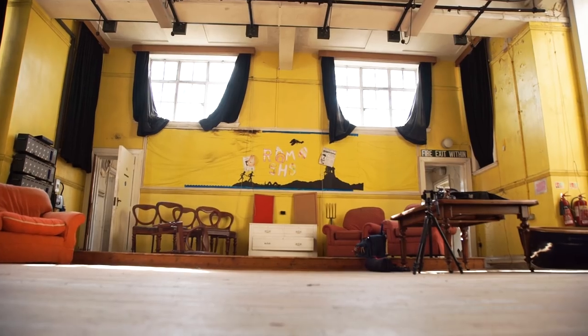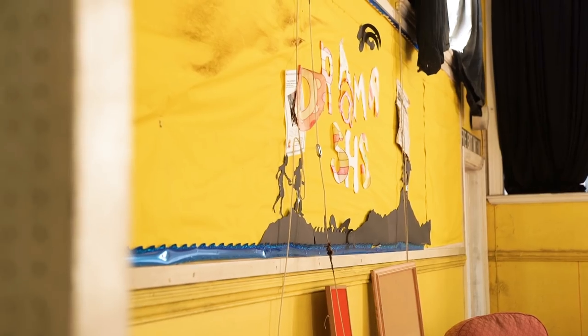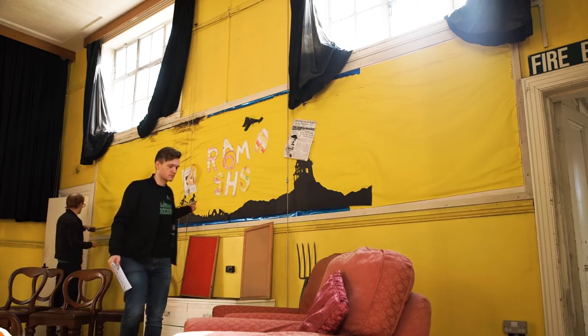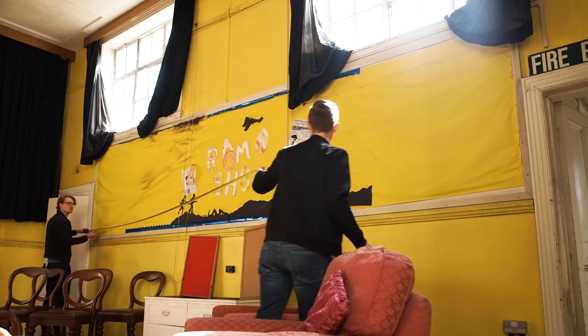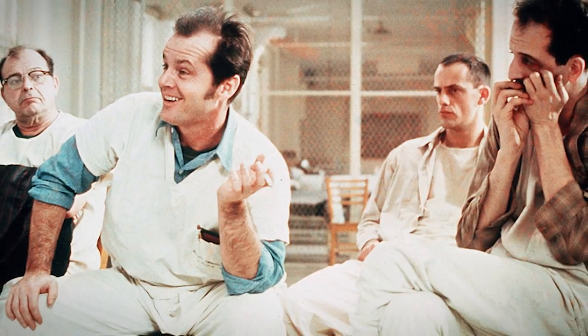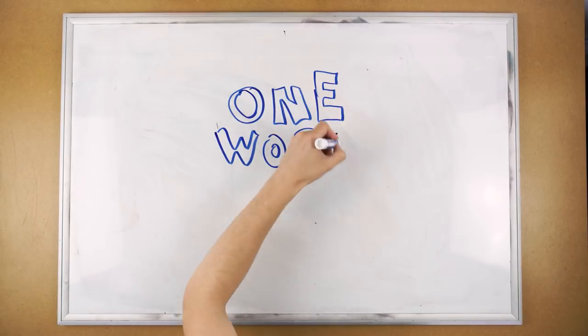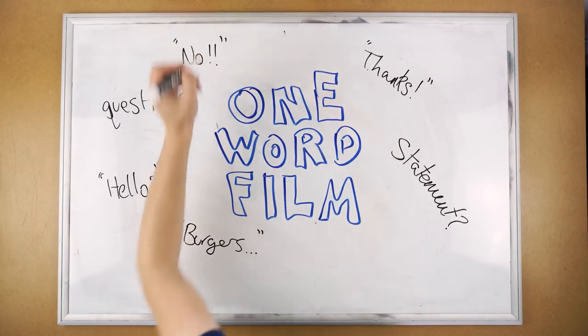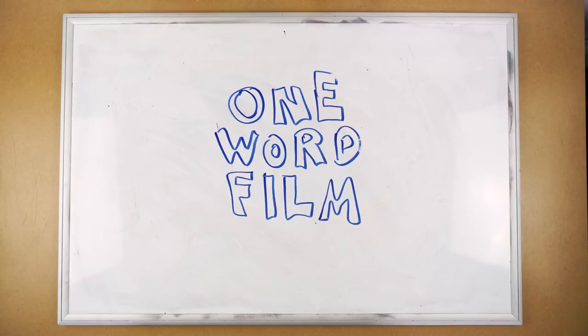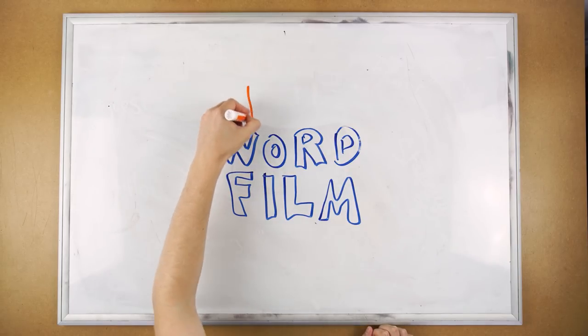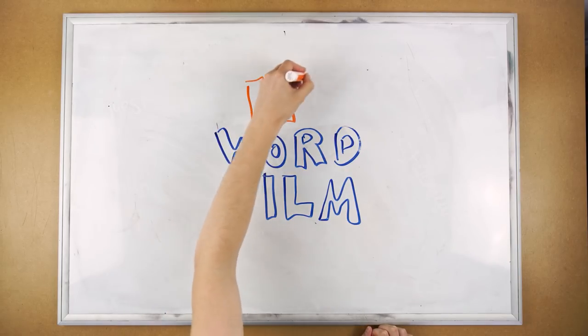We knew we had access to an old school assembly hall through a contact from our previous film. From the moment we saw the location, we knew we wanted to make a film that looked and felt like One Flew Over a Cuckoo's Nest. At first we found writing the initial idea quite difficult — what should the word be, when should it be said? We soon realized the word was becoming the focus of the script, so instead we decided to write the film without any dialogue and add a single word back in when it would pack a punch. So now we had a location, a character, and an initial direction to base the script on.